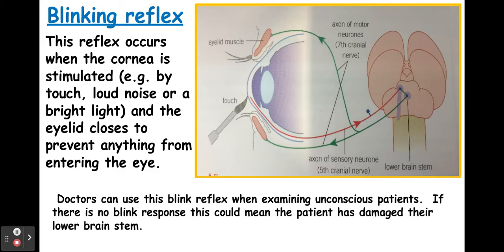The next one is the blinking reflex. This is where the reflex will occur if the cornea is stimulated — this could be through touch, a piece of dust, an object, a loud noise, or bright light. The idea is that the eyelid would close to prevent anything from entering the eye. Doctors can use this blink reflex when examining unconscious patients to see if there is a blink reflex or not, as its absence can indicate some damage within the lower brainstem.